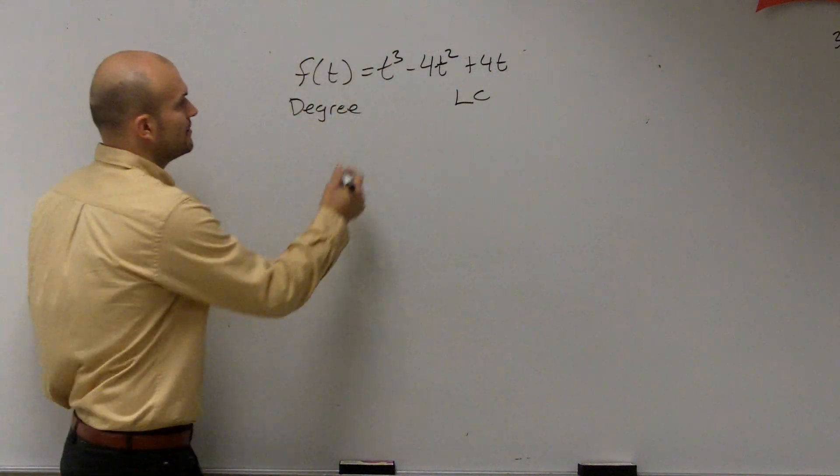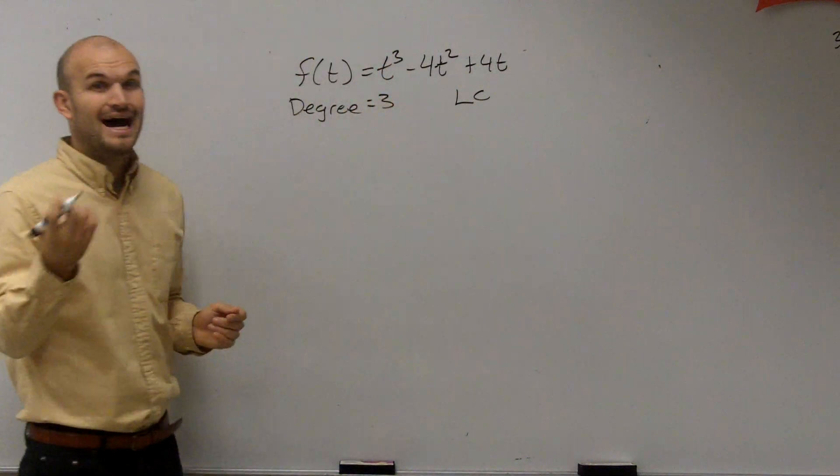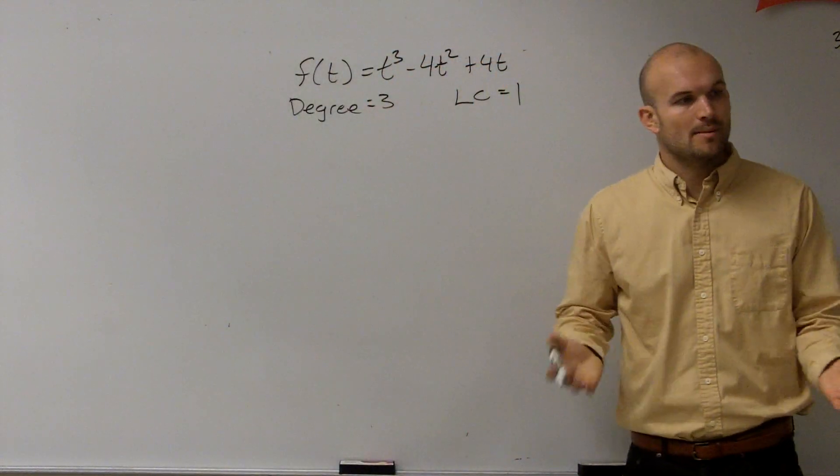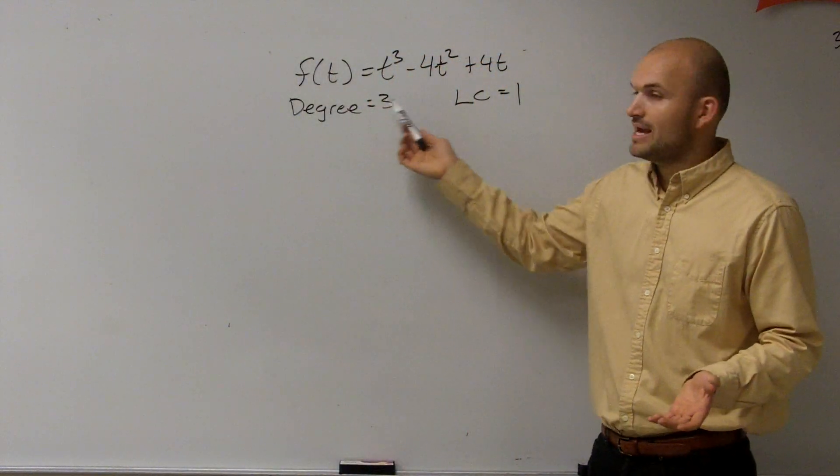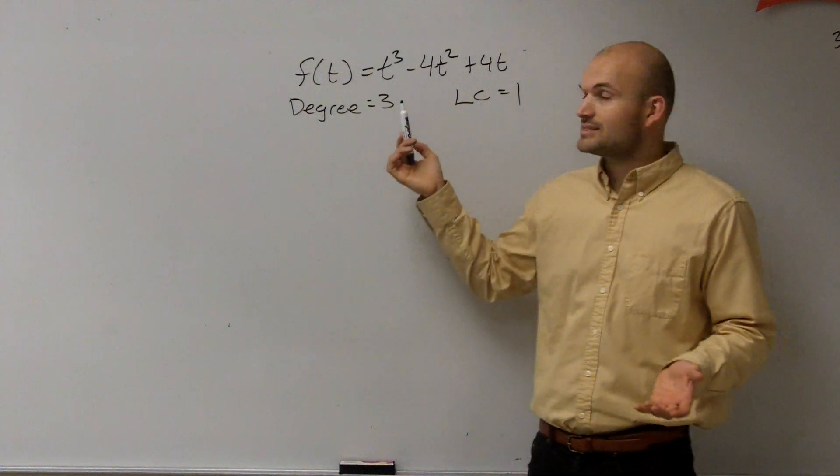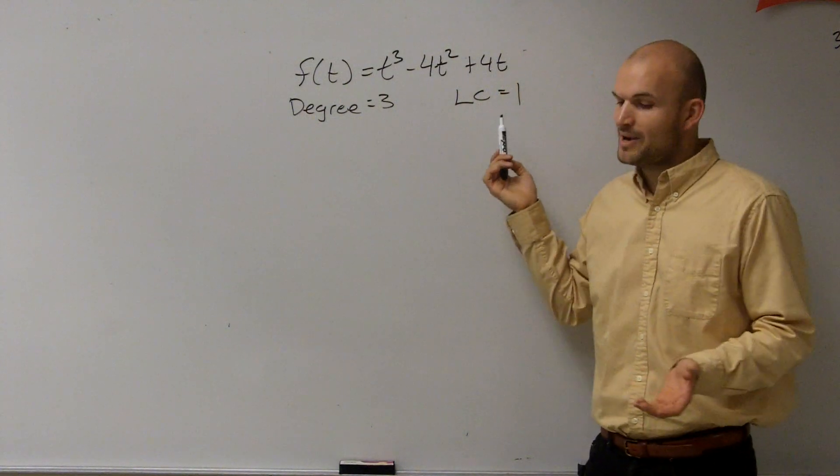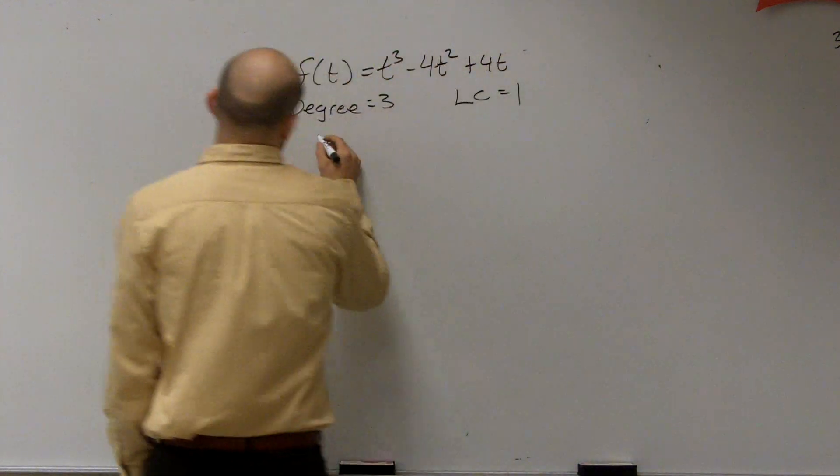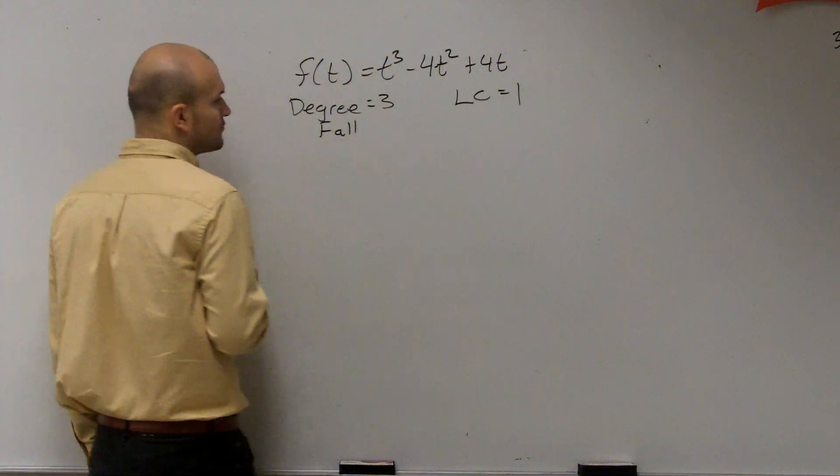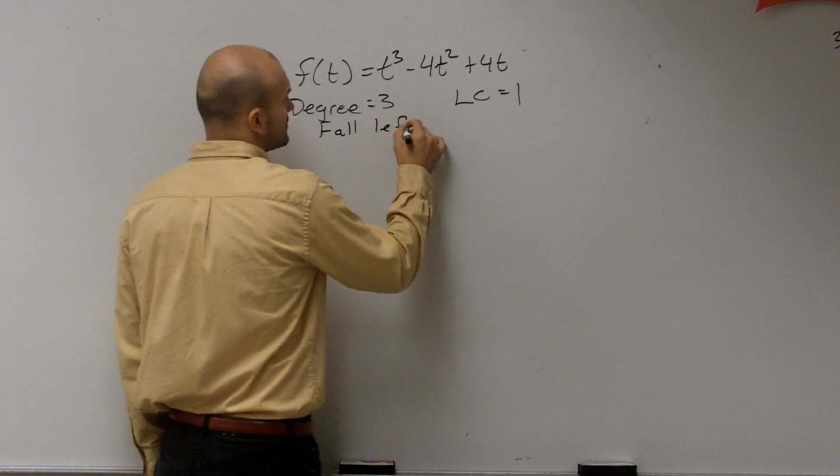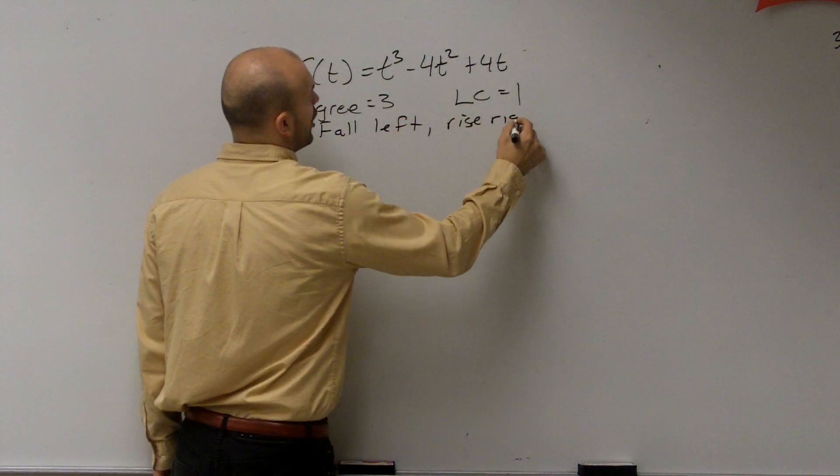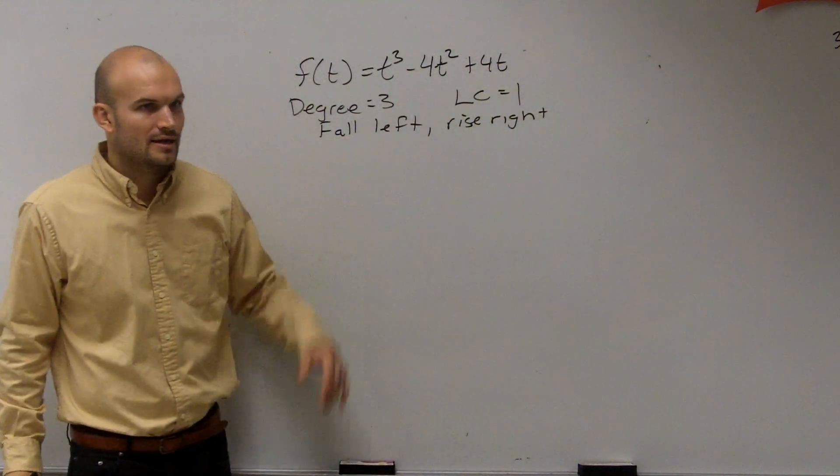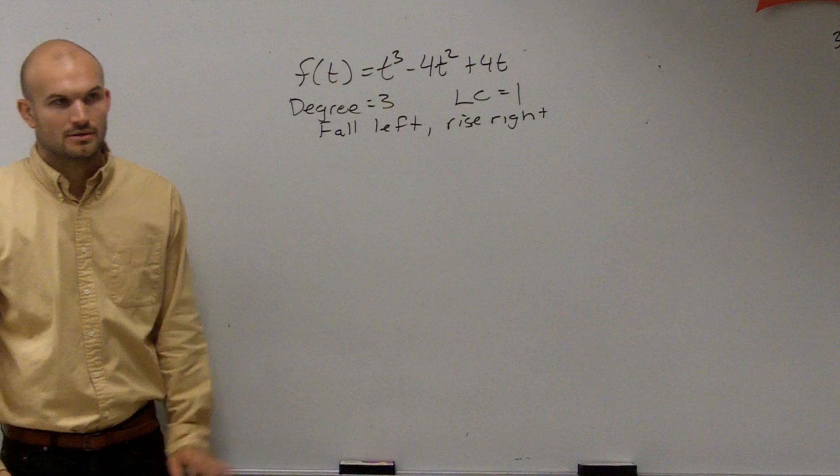Degree, remember, is your highest exponent, 3. It's odd. LC is 1, which is positive. So remember, by our leading coefficient test, when we have an odd degree, that means it's either going to our odd degree and it's positive. That means it's going to fall left and rise to the right, correct? So the end behavior of this graph is going to fall left and rise to the right. And that's for all polynomials with an odd degree and a positive leading coefficient. It works for all of them.